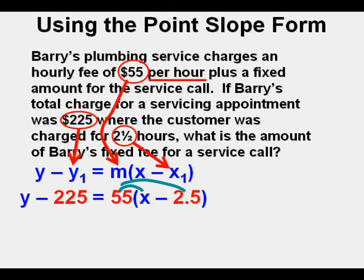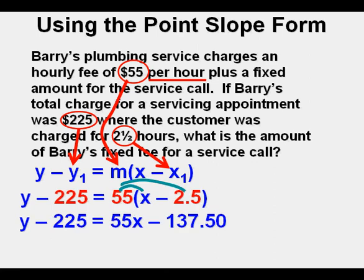We distribute the 55 to the terms inside parentheses. So now we have y minus 225 equals 55x minus 137.5.